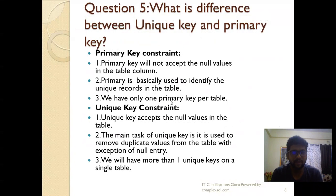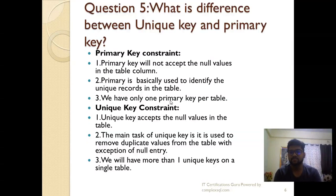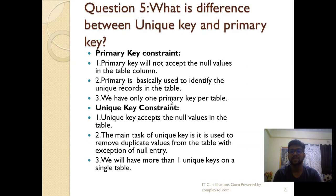What is the difference between a unique key and a primary key? First, a primary key will not accept null values in the table column, whereas a unique key does accept null values. Second, a primary key is used to identify unique records in the table, while a unique key's main task is to remove duplicate values with the exception of null entries. Third, there can only be one primary key per table, but more than one unique key per table is allowed.